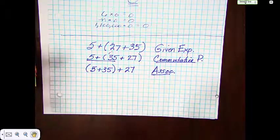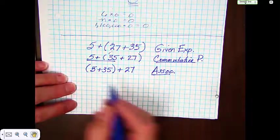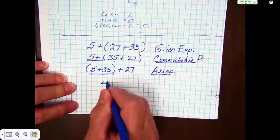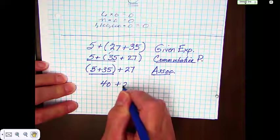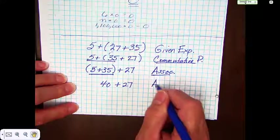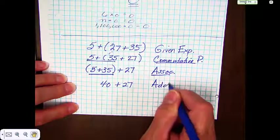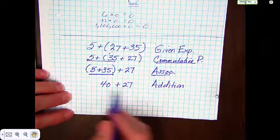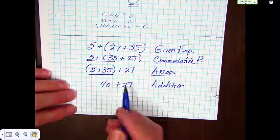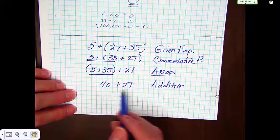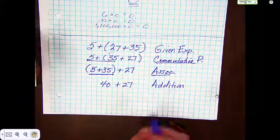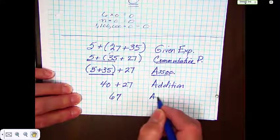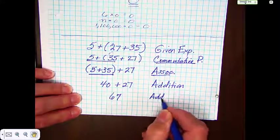Now all I have to do is add these two numbers and I'm going to get 40 plus 27, and the reason I can do that is just simple addition. And again, now I have a much easier way to add these because 40 plus 27 I can do in my head, and that is 67 — and of course that was also addition.